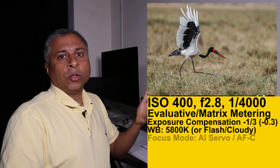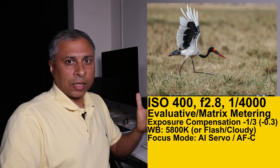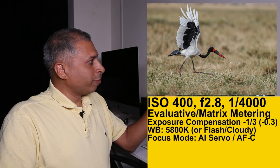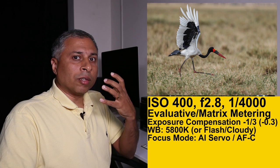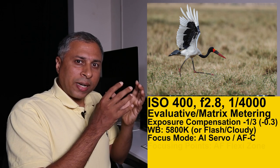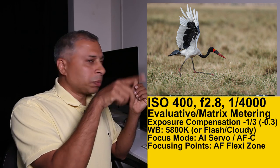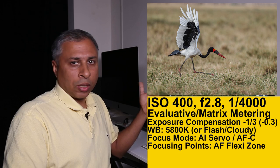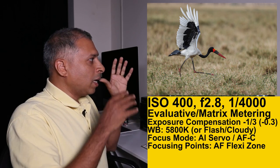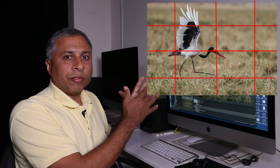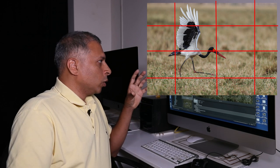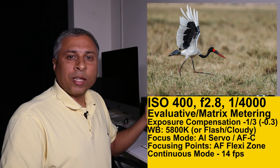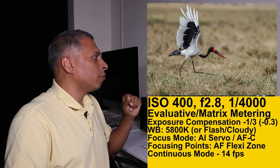Since there was continuous movement, I used AI Servo — for Nikon that's AF-C (autofocus continuous). For the focusing point, since I knew the bird was going to fly and a single point might be difficult to keep on the face, I used the Canon 1D X Mark II's flexi zone to create a cluster of points around the face. For composition, I placed the bird more to the left side, giving more space in front of it. I shot in continuous mode at around 14 frames per second to capture the action.